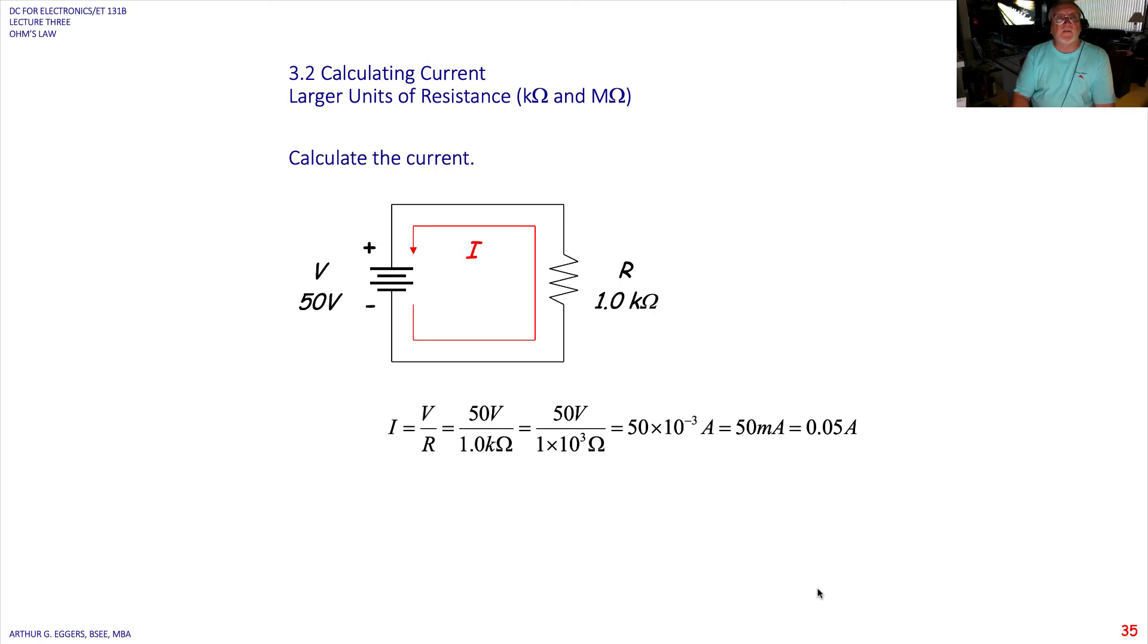So in this one, 50 volts divided by 1k or 1000. So again, 50 volts divided by 1k. 1k is 10 to the third. Move that 10 to the third into the numerator. We have 50 times 10 to the minus 3, which is milliamps. So we have 50 milliamps of current, or if we move the decimal place 3 spaces, 0.05 amps.